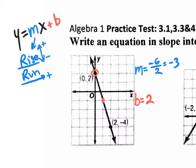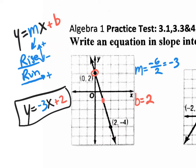Let's write our equation. Y equals m, which is negative 3, x plus b plus 2. There's your equation: y equals negative 3x plus 2. You could put the slope over 1 if you wanted to, but the multiple choice is not going to put it over 1. So that's what you're going to see on the test tomorrow.